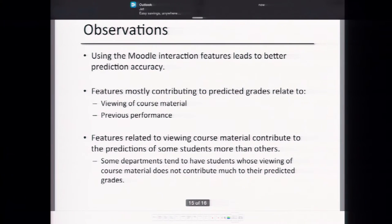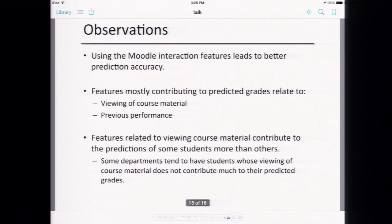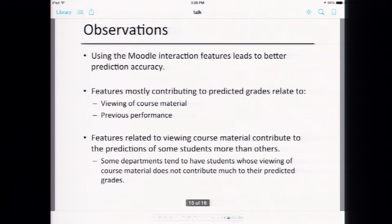In summary, using Moodle interaction features improves prediction accuracy. The most important features continue to be whether the student has viewed course materials and how well the student performs overall. There's also a department-specific signature in which set of features best predicts student performance.